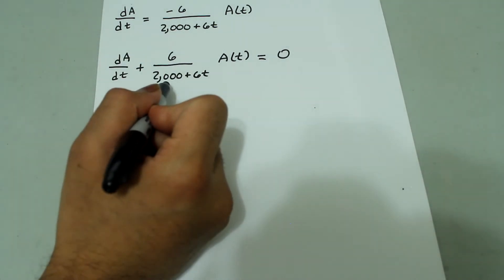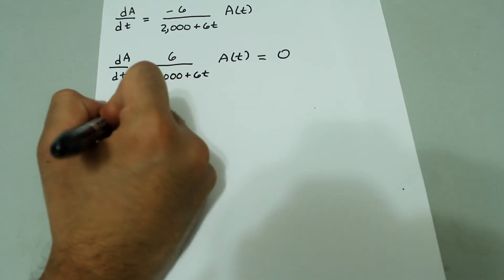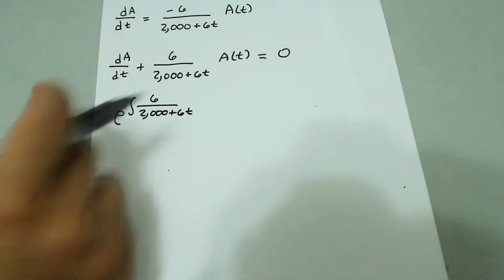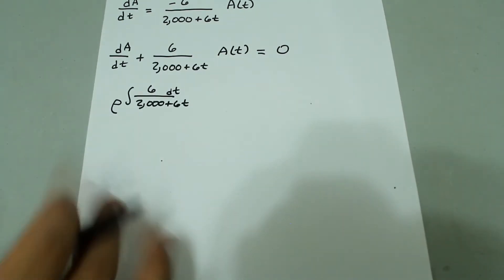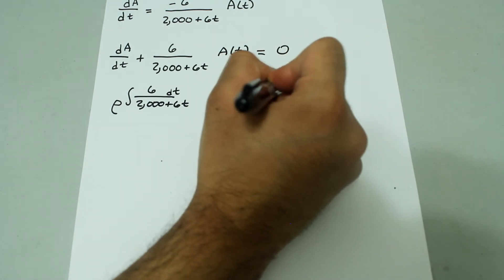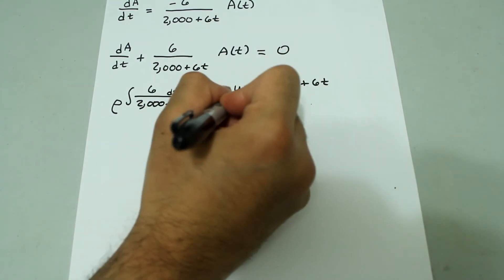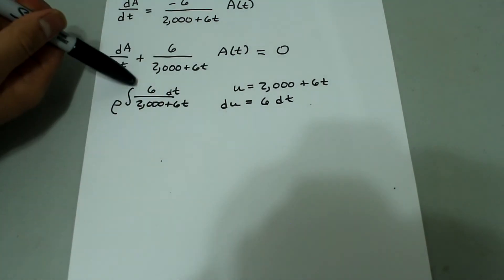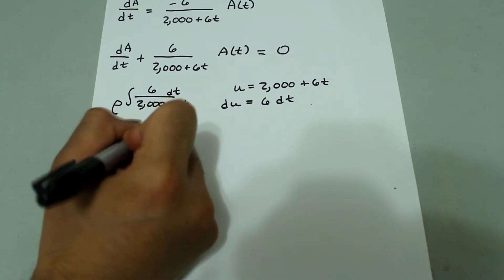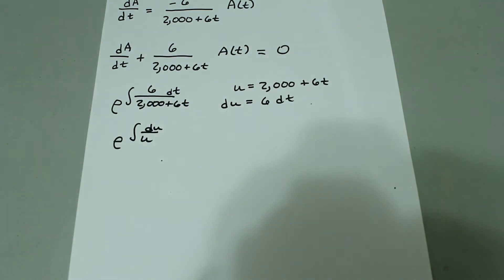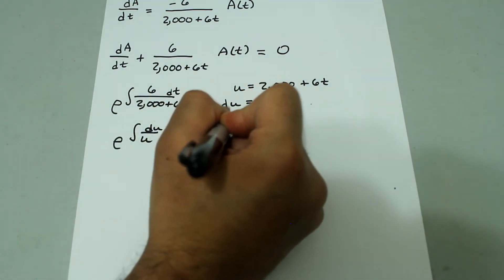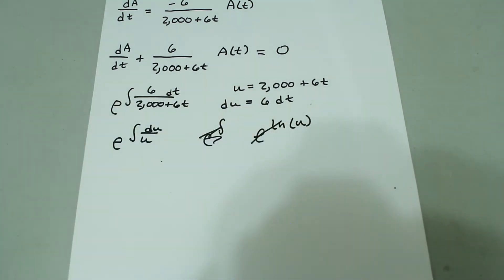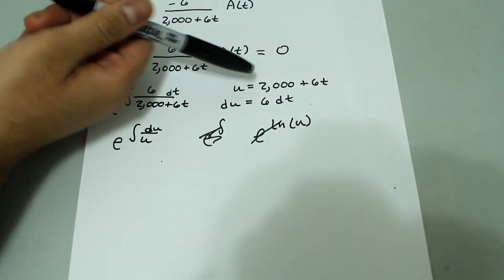The integrating factor is e to the integral of the coefficient on the a term: e to the integral of 6 over (2000 plus 6t). Using u-substitution, let u equal 2000 plus 6t, so du equals 6 dt. The du takes care of the 6 dt on top and u takes care of the denominator. We can rewrite this as e to the integral of du over u, which becomes e to the natural log of u. The e and natural log cancel, leaving just u, which equals 2000 plus 6t.